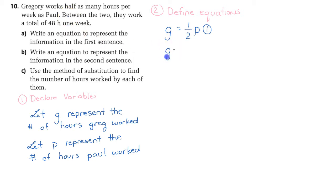The second sentence, between the two they work a total of 48 hours in one week. That means that G plus P is equal to 48. And that's equation two. We've just done part A and B. Equation one is the equation that represents the information in the first sentence. Equation two is the information that is represented in the second sentence.